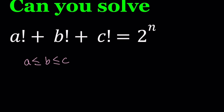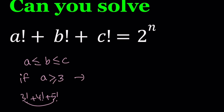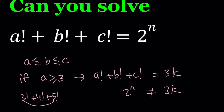We run into an interesting situation. If a, which is the smallest one, is 3 or greater than 3, then our sum — since a is the smallest — anything greater than a factorial is going to be divisible by 3. So everything here is divisible by 3. For example, 3 factorial plus 4 factorial plus 5 factorial all contain a factor of 3, so the sum is a multiple of 3. But 2 to the power n cannot equal a multiple of 3. Therefore, we can't have a greater than or equal to 3.